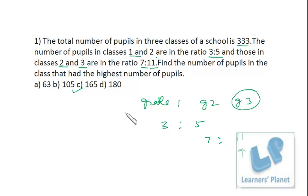How do you combine the ratios? Just draw the arrows like this. So, this into this, that is 21. 5 into 7, 35. And 5 into 11, 55.